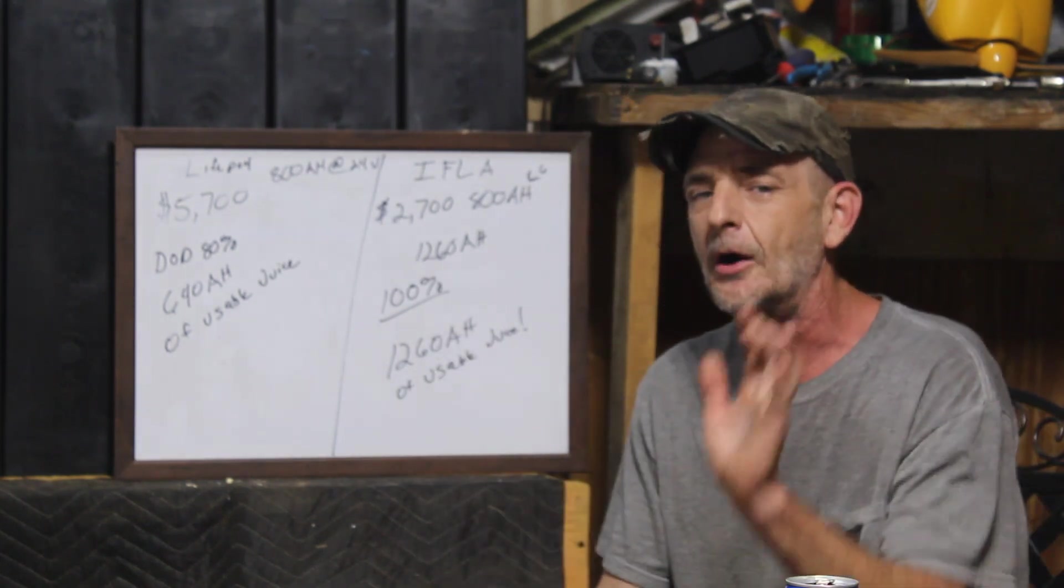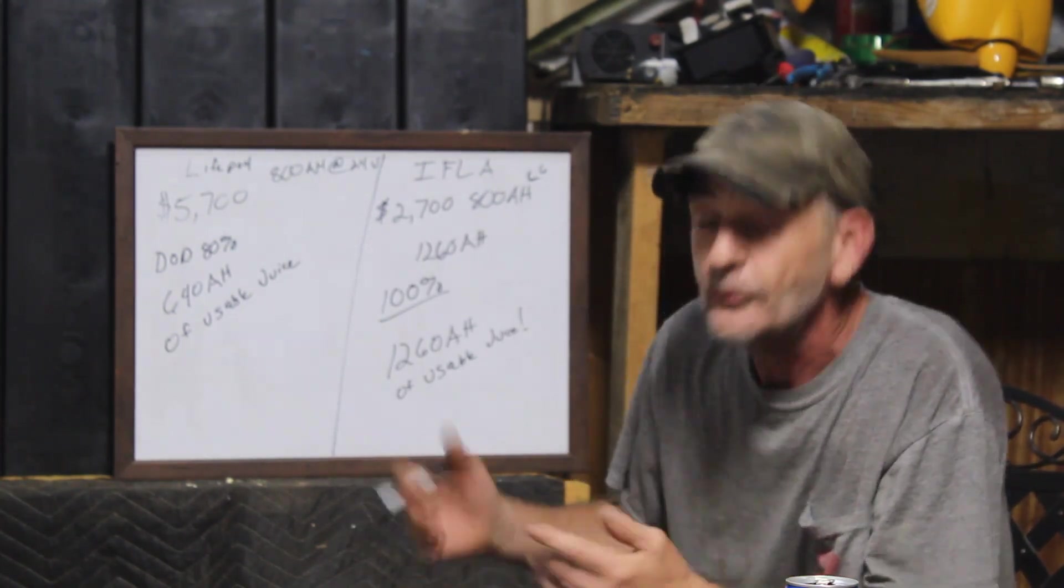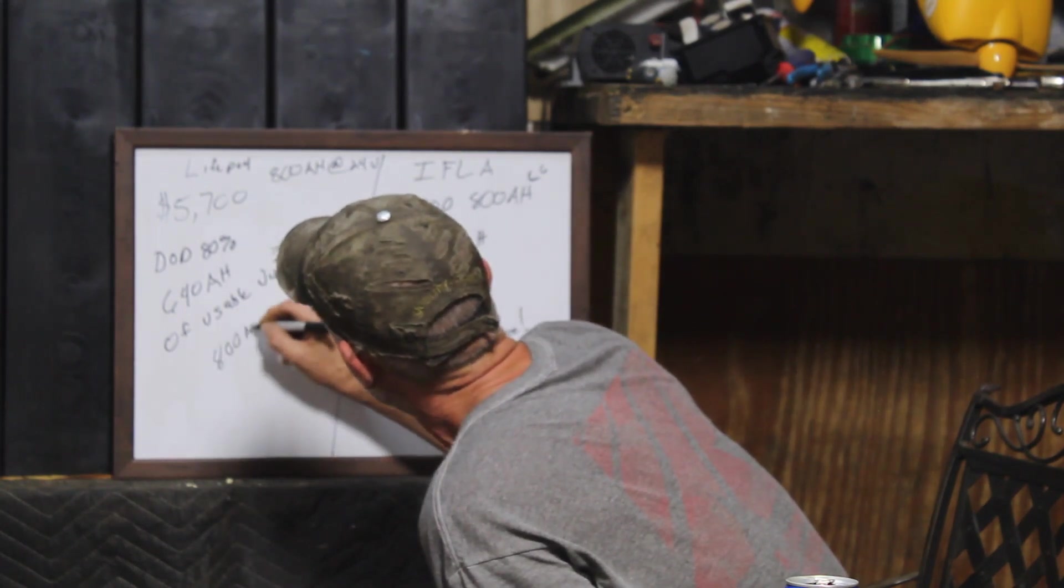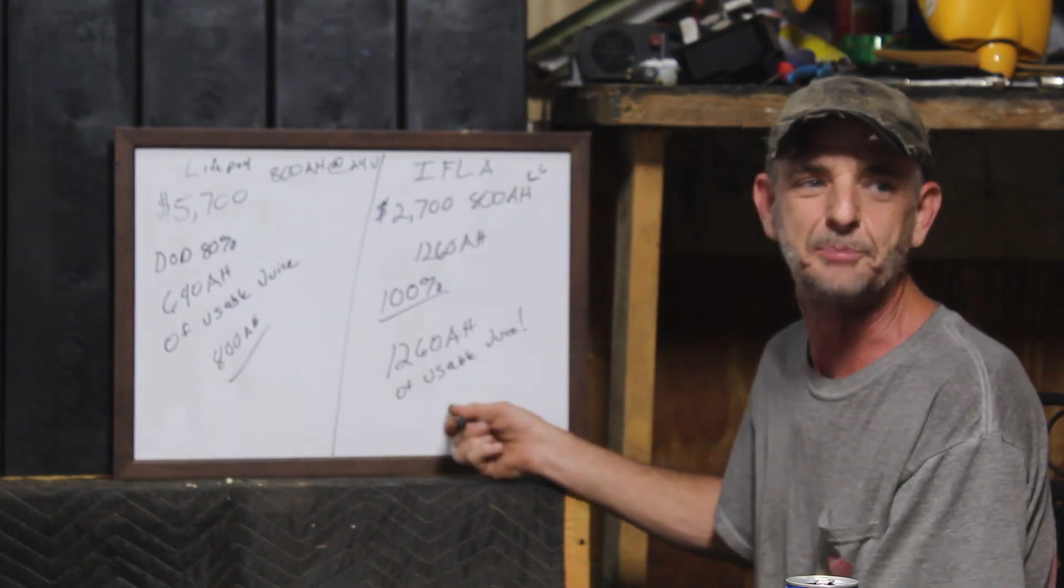And now a lot of people are going to say, 'Oh wow, you can go 100% on them.' Okay, we'll go 100% - that gives us 800 amp hours of usable juice. It still gets crushed by the IFLA.